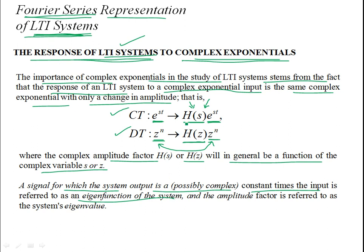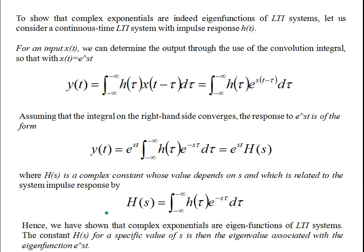The amplitudes H(s) and H(z), which are complex amplitude multiplying factors, are known as the eigenvalues of the system. To see this, you know that LTI systems can be represented by convolutions — the output can be represented by the convolution sum or convolution integral, as in this continuous time system.